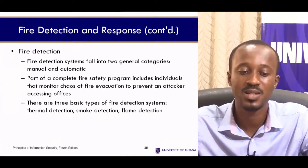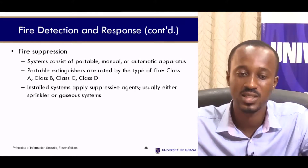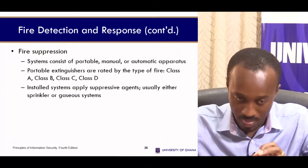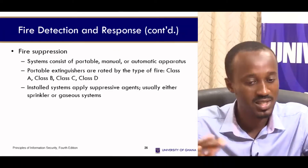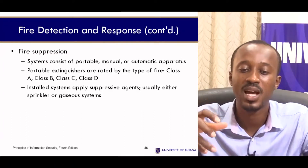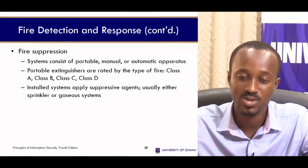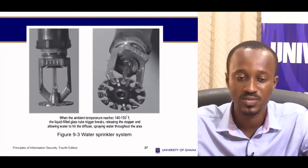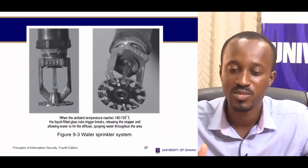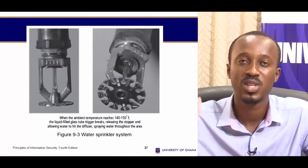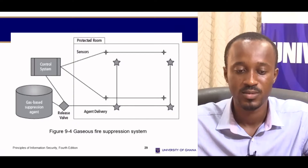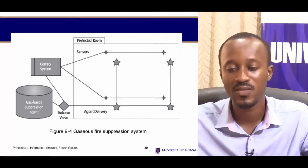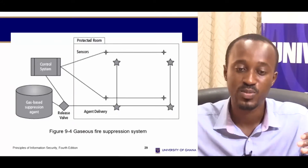There are three basic types of fire detection systems: thermal detection, smoke detection, and flame detection. Fire suppression systems consist of portable, manual, or automatic apparatus. Portable extinguishers have ratings: Class A, B, C, D, and so on. Installed systems apply suppressive agents, usually either sprinkler or gaseous systems. Water sprinklers are found in many offices, and gaseous fire suppression systems use sensors placed throughout the facility to respond to a fire outbreak.